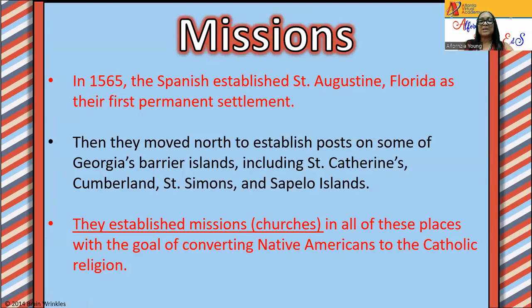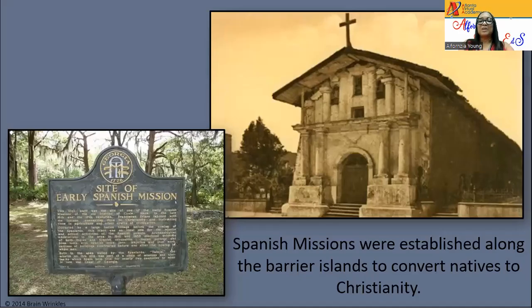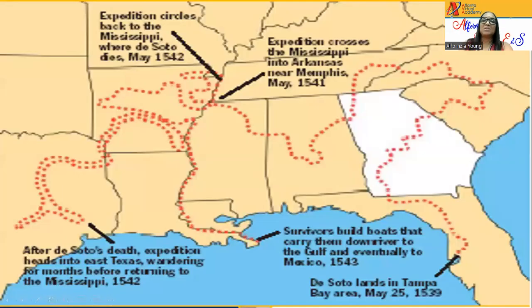In 1565, the Spanish established St. Augustine, Florida as their first permanent settlement. Then they moved north to establish posts on some of Georgia's barrier islands, including St. Catherine, Cumberland, and St. Simon. They established missions — missions are churches — with the goal of converting Native Americans to the Catholic religion. That might be a question on the Georgia Milestone Test. It's almost like somebody coming to your house and making you do something against what you believe in. Spanish missions were established along the barrier islands to convert Natives to Christianity. Right here it shows his route.